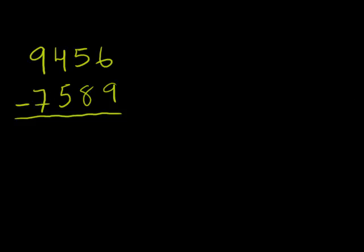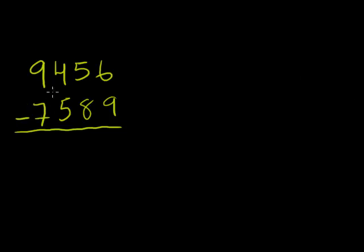That's pretty easy, because I just take 9,000 minus 7,000. So what I can do is I'll cross out this, and I'll subtract 7,000 from it, and I'm going to get 2,456.